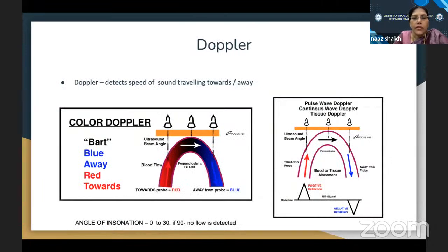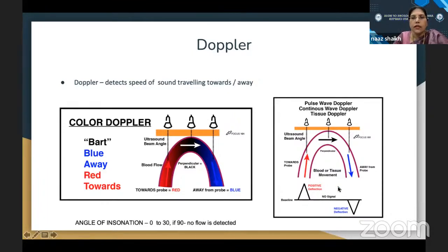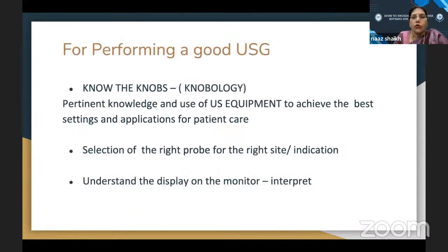In color Doppler, blood vessels moving away from and towards the transducer have different frequencies captured as color. Blue indicates flow away and red indicates flow towards the transducer — it does not tell you whether it is a vein or artery, just the direction of flow. When put on X and Y axes, positive deflection is taken as towards and negative deflection as away from the transducer. To perform good ultrasound, you need knowledge of knobology — the pertinent knowledge and use of ultrasound equipment to achieve the best settings. Selecting the right probe for the right site and indication is very important.